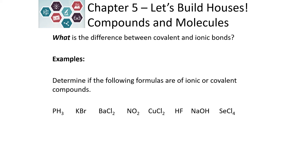Determine if the following compounds are ionic or covalent. For our first example, PH3: phosphorus is a nonmetal and is not in group seven, so phosphorus paired with hydrogen means hydrogen would behave as a nonmetal in this case. This would be a covalent compound.